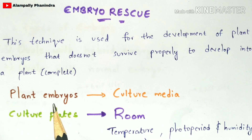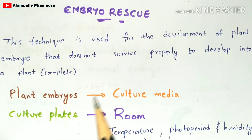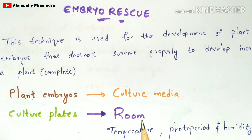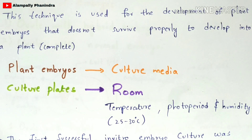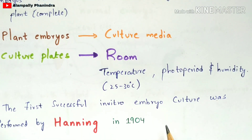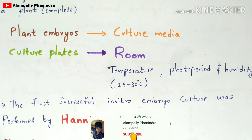In embryo culture, plant embryos are taken into a culture media — culture plates or culture tubes. The embryos are placed in a culture plate and kept in a room maintained at a proper temperature and humidity. The temperature should be maintained at 25 to 30 degrees Celsius. The first successful in vitro embryo culture was performed by Hanning in 1904.